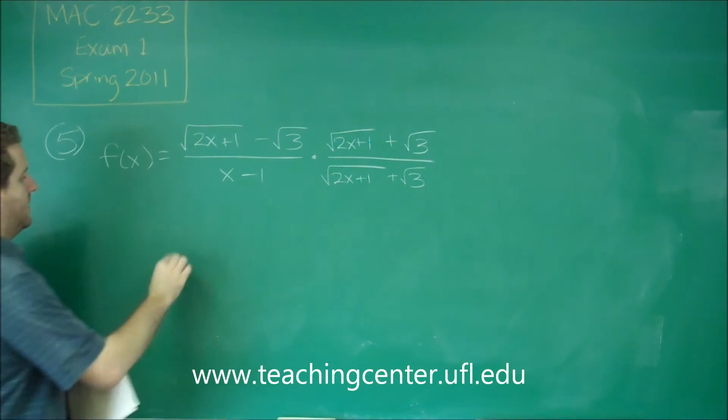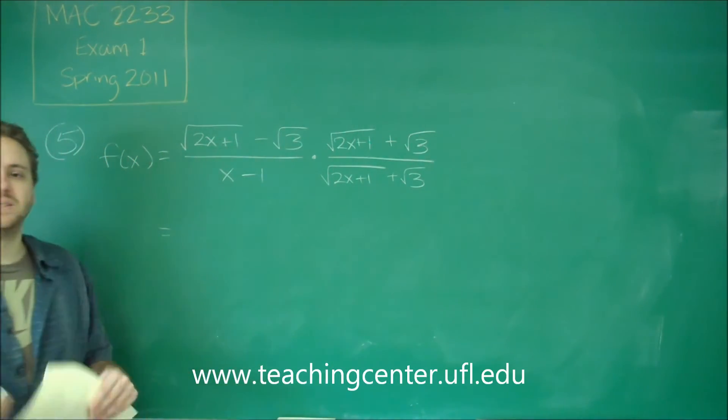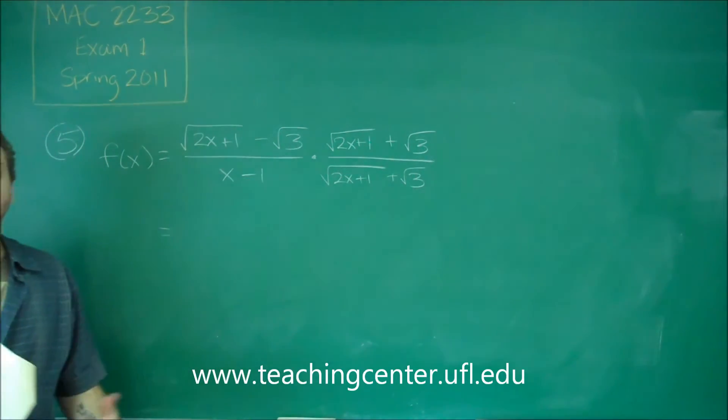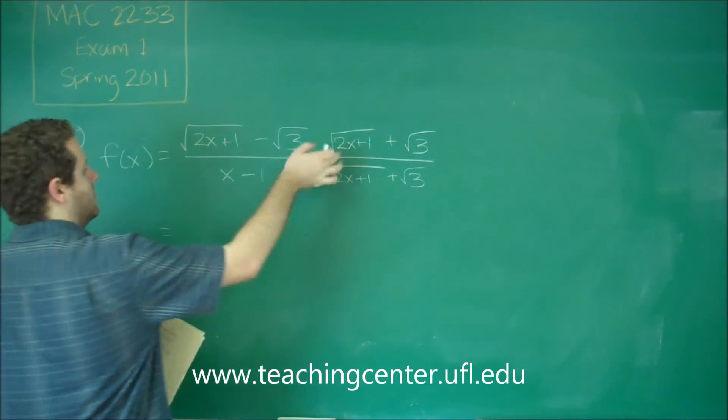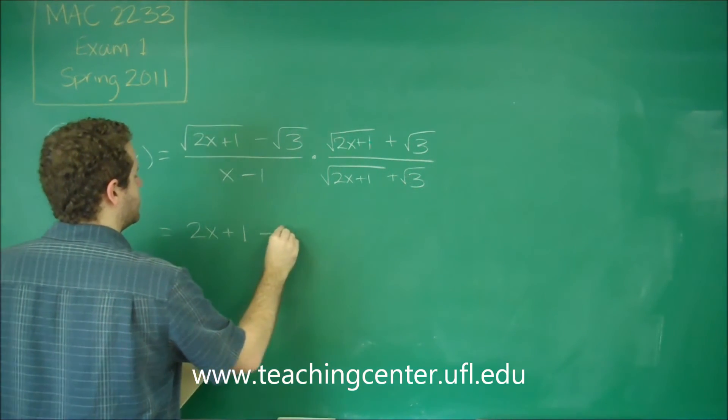When you multiply two conjugates times each other, that's a difference of two squares. You have a minus b, a plus b. It's always the first one squared minus the second one squared. So that's just going to be 2x plus 1 minus 3.